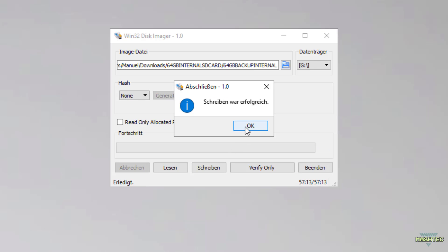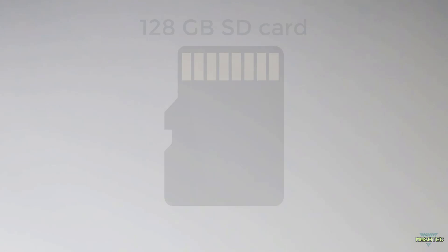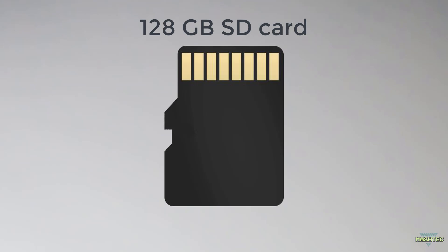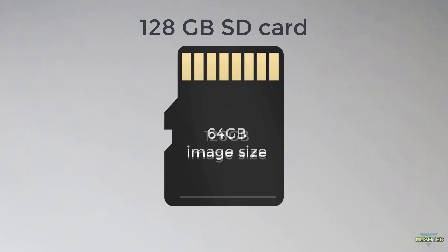We successfully flashed the image to our SD card. We can now close Win32DiskImager and remove the SD card safely. Since the disk image is designed for a 64GB SD card, you might want to make use of the remaining space if yours has a higher capacity. In my case I use a 128GB SD card, so I want to assign the remaining space to the image so I can use it for further ROMs and games. This next step is optional, but if you have a bigger card I highly recommend it.